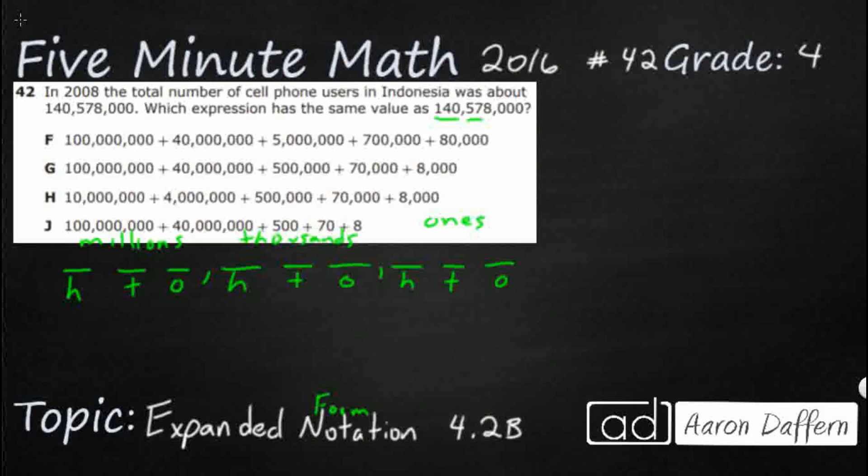So let's write our number here. We've got 140 million, 578,000. And then we've just got zeros in that ones period. So how would we write that in both expanded form and expanded notation?